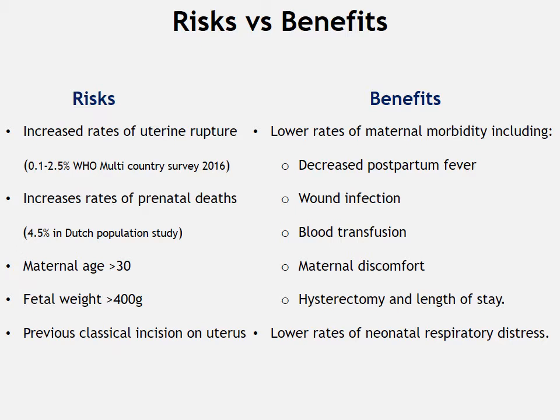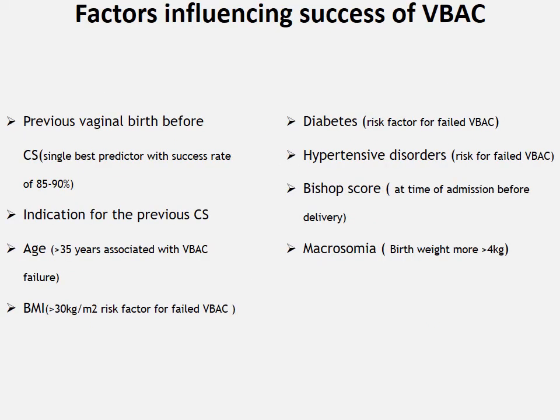Risks include increased rates of uterine rupture — 0.1 to 2.5% according to the WHO multi-country survey in 2016 — and increased rates of perinatal deaths according to the Dutch population study at 4.5%. Risk factors include maternal age more than 30, fetal weight more than 4,000 grams, and previous classical incision on the uterus. On the other hand, benefits include lower rates of neonatal respiratory distress.